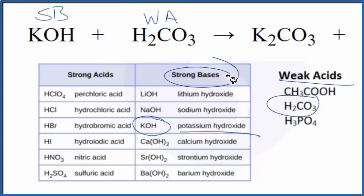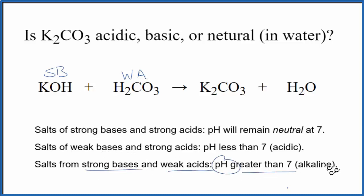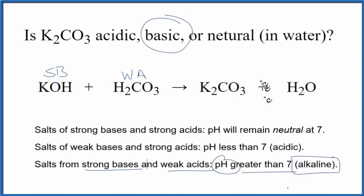Now we can use the rules. We're looking for a strong base and a weak acid. Strong base and weak acid — the pH will be greater than 7. It'll be an alkaline solution, we also call that a basic solution. So in answer to our question, we put potassium carbonate, K2CO3, in water — it will form a basic or alkaline solution.